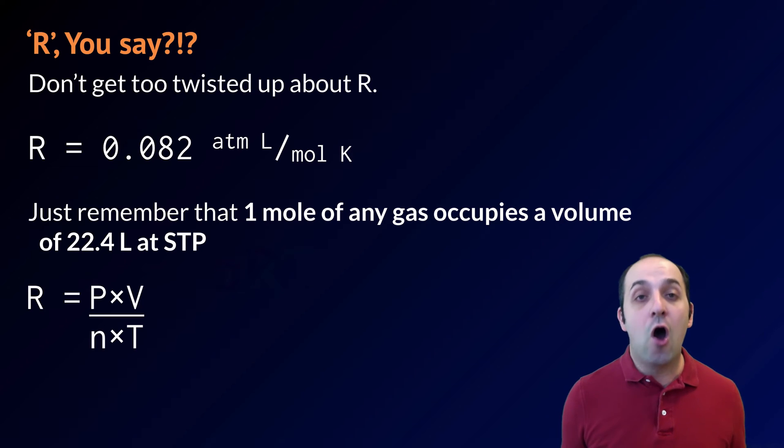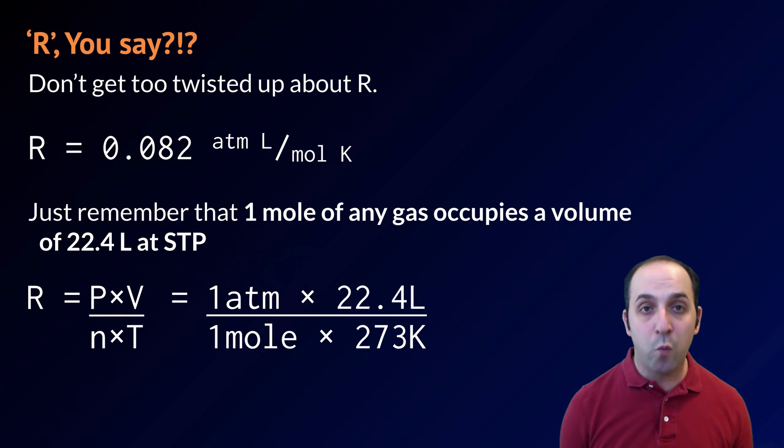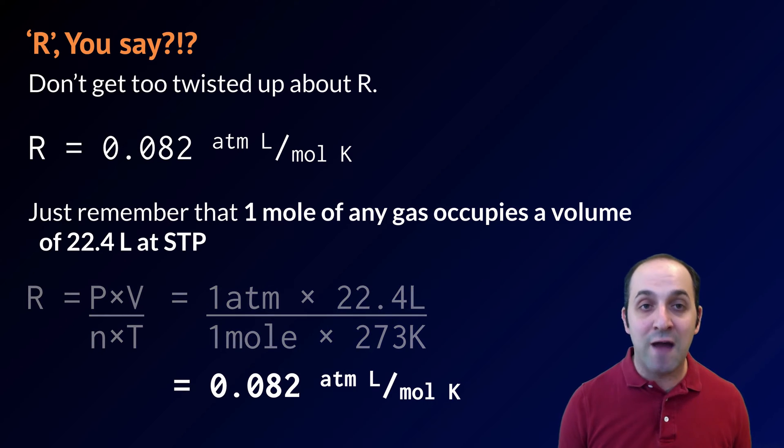If that's the case, R is always equal to the pressure times the volume divided by the number of moles of the gas times the temperature. If I plug in my values from this statement, I'll get that R is equal to 1 atmosphere times 22.4 liters divided by 1 mole times 273 degrees Kelvin. Doing that, I get a value of 0.082 atmosphere liters per mole Kelvin, the universal gas constant.